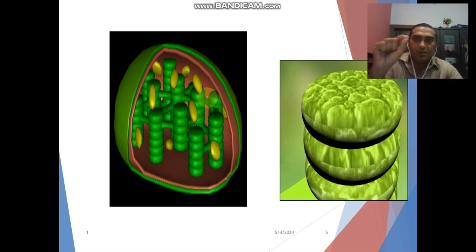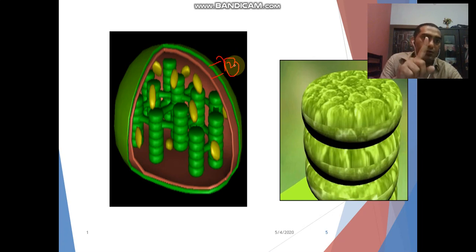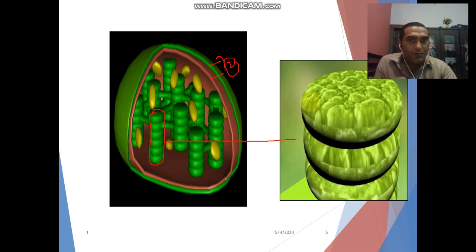Chloroplast and chloroplast membrane. This is known as thylakoid, the membrane. And this is which is known as thylakoid.